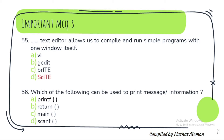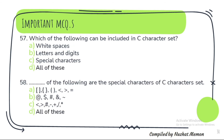Question 56: Which of the following can be used to print message information? printf. Question 57: Which of the following can be included in the C character set? Option D — all of these, that is white spaces, letters and digits, and special characters. Question 58: Which of the following are the special characters of the C character set? It is all of these — option A, option B and option C.